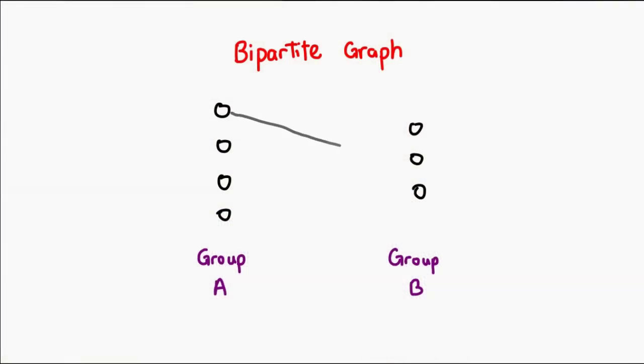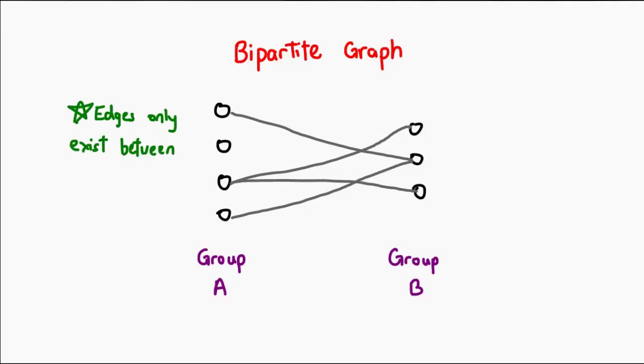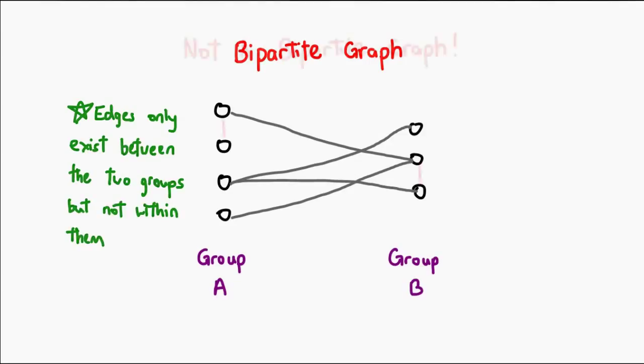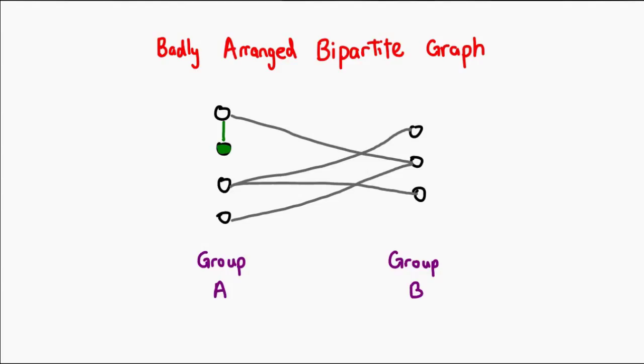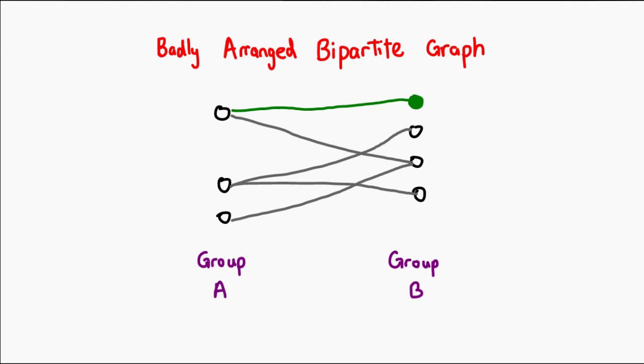What about bipartite graphs? These are interesting. If you have a set of nodes that you can separate into two groups, and all the edges in your graph can only go from one group to another — with no edges within the same group — then you've got a bipartite graph. The challenge is it might look like a bunch of points and lines at first, but it may be possible to shuffle things until you get a bipartite graph.